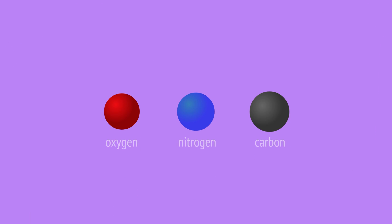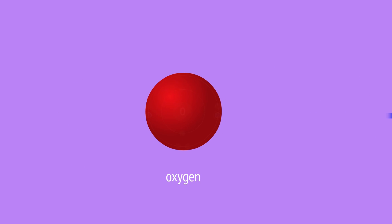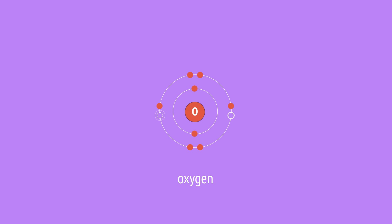Oxygen, nitrogen, and carbon are examples of non-metal atoms that can form double or triple covalent bonds. That's because they have more than one empty location in their outer, or valence, electron shells. Oxygen has six outer electrons, and so two empty locations to complete the outer shell with eight electrons. As a result, it can form two covalent bonds.